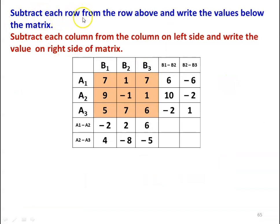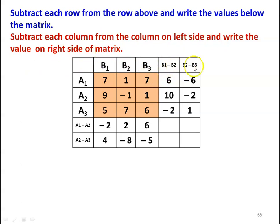In the matrix method, subtract each row from the row above and write below the matrix. A1 minus A2: (7−9)=−2, (1−(−1))=2, (7−1)=6. A2 minus A3: (9−5)=4, (−1−7)=−8, (1−6)=−5. Similarly, subtract each column from the column on the left side. B1 minus B2: (7−1)=6, (9−(−1))=10, (5−7)=−2. B2 minus B3: (1−7)=−6, (−1−(−1))=0 corrected as (−1−1)=−2, (7−6)=1.